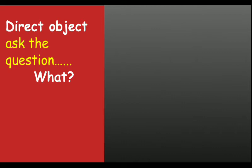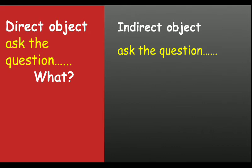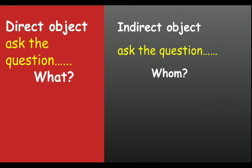Direct object asks the question 'what'. Indirect object asks the question 'whom'. Let's see an example and make clear how to identify direct and indirect object in a sentence.